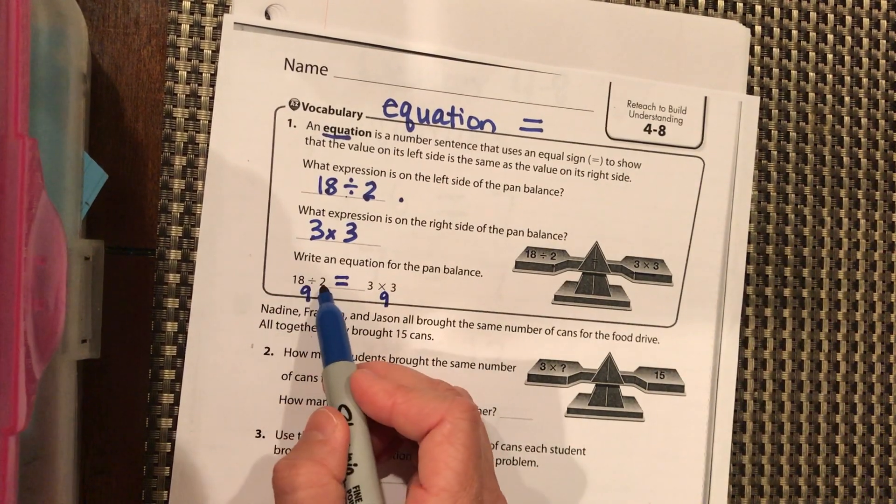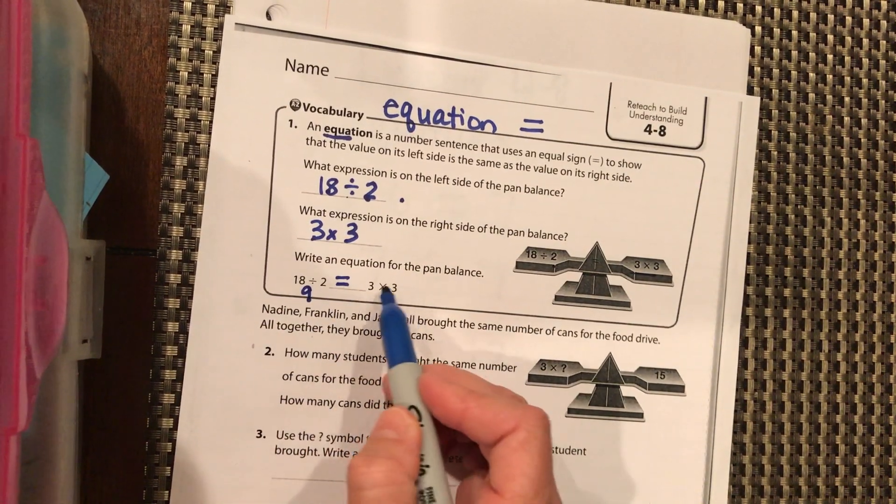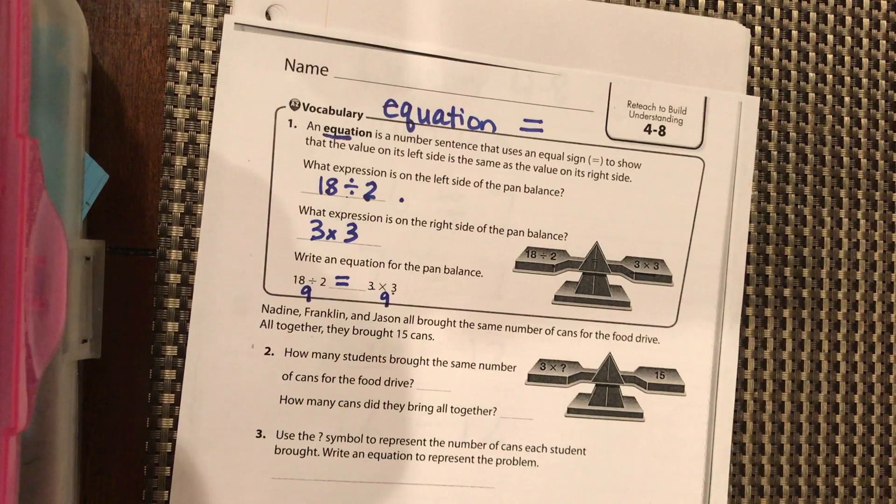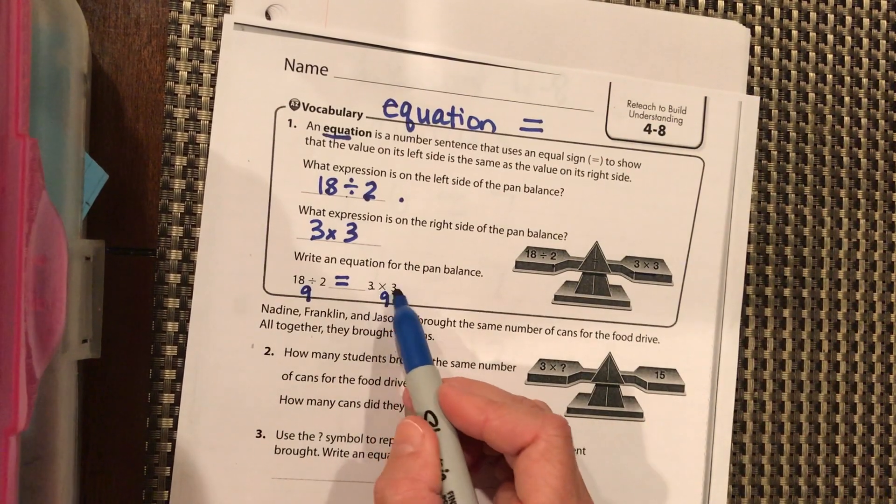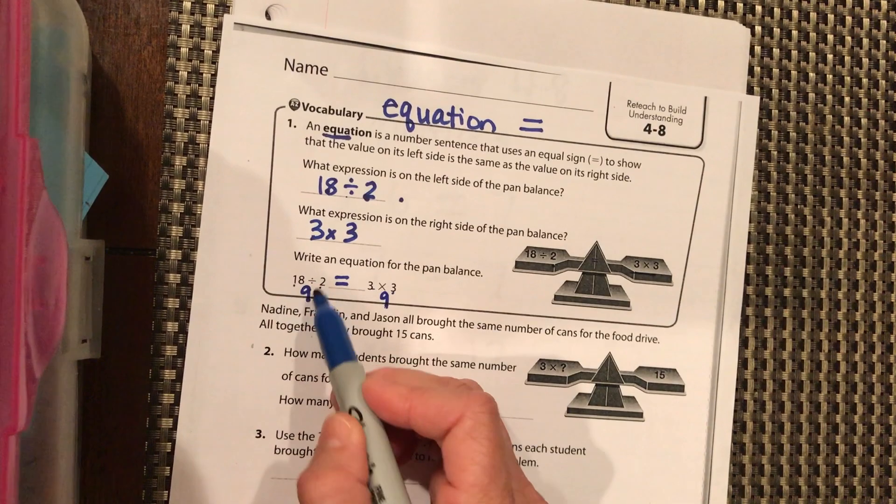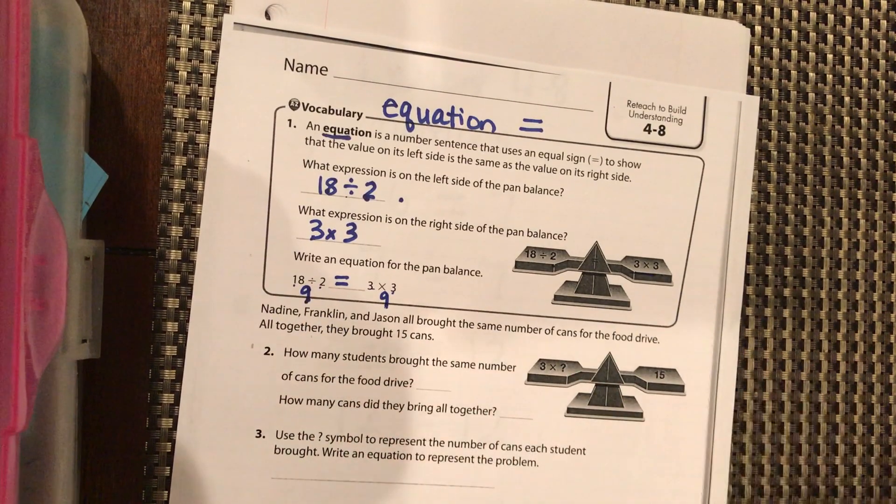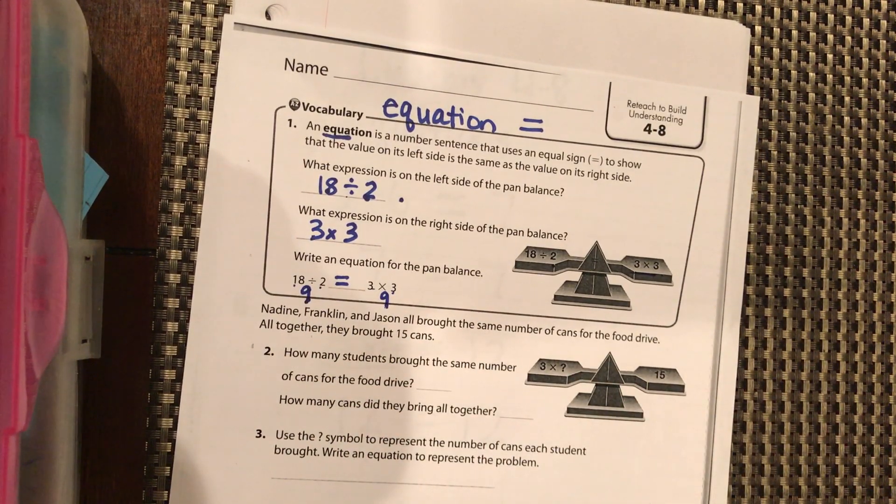So we can put an equal sign. 18÷2 is equal to 3×3. It looks really crazy, but when you break it down, 3×3 is 9 and 18÷2 is 9, therefore the scales balance out and they're equal on both sides.